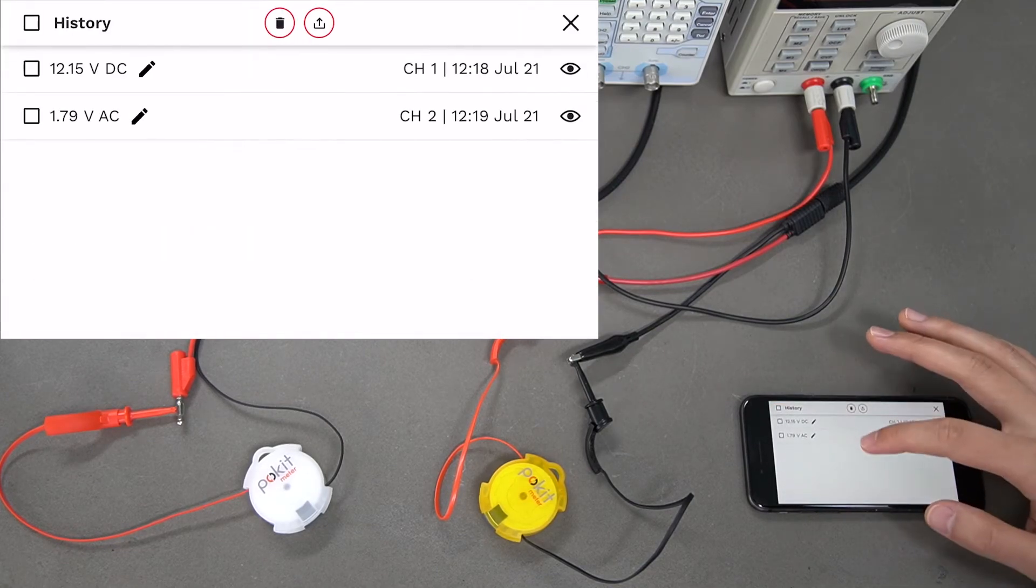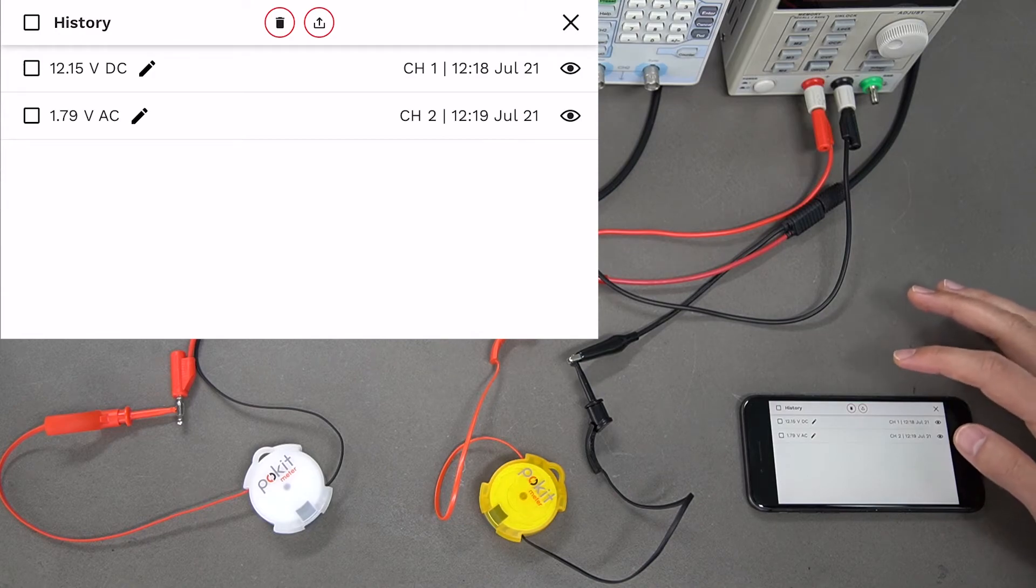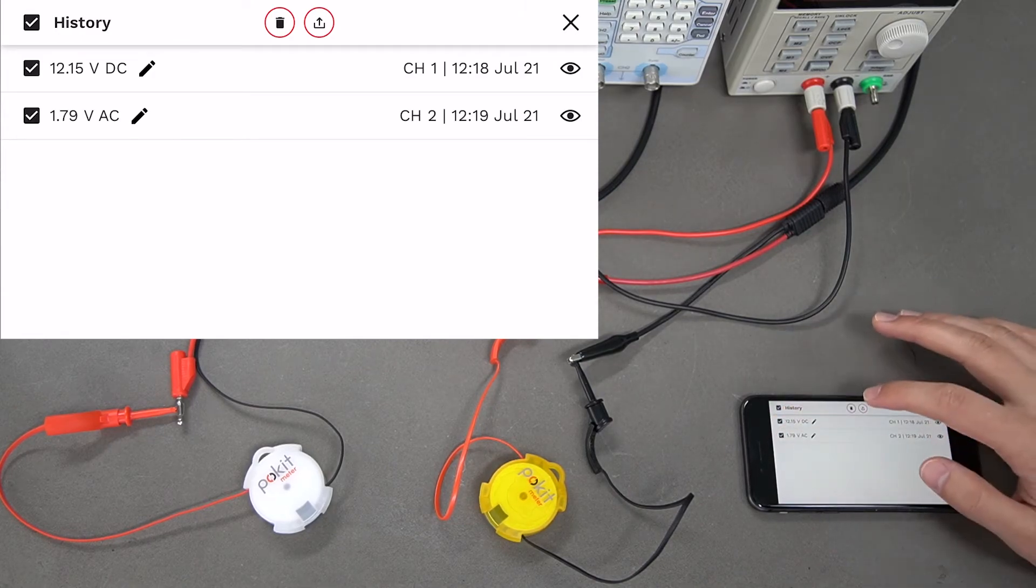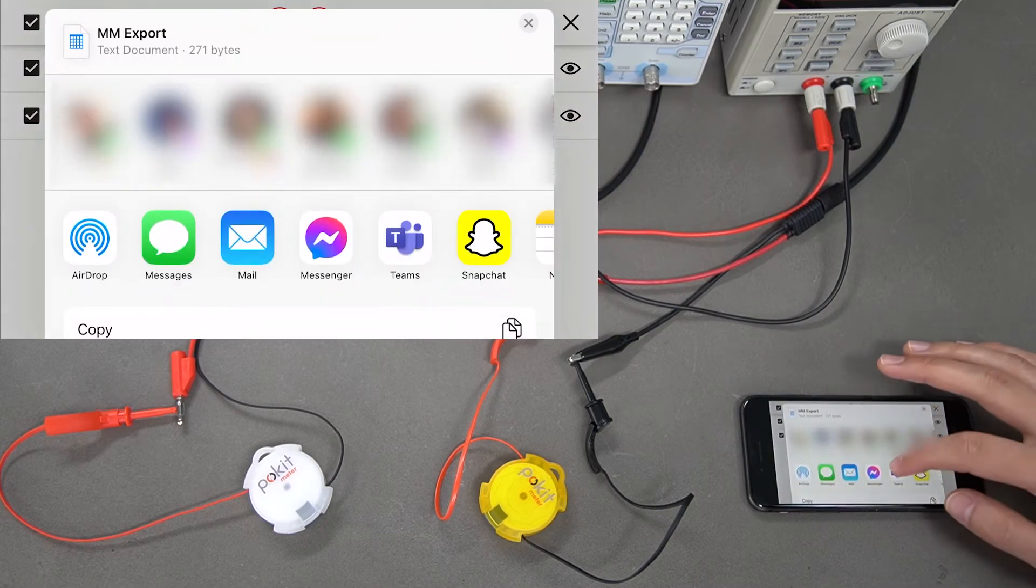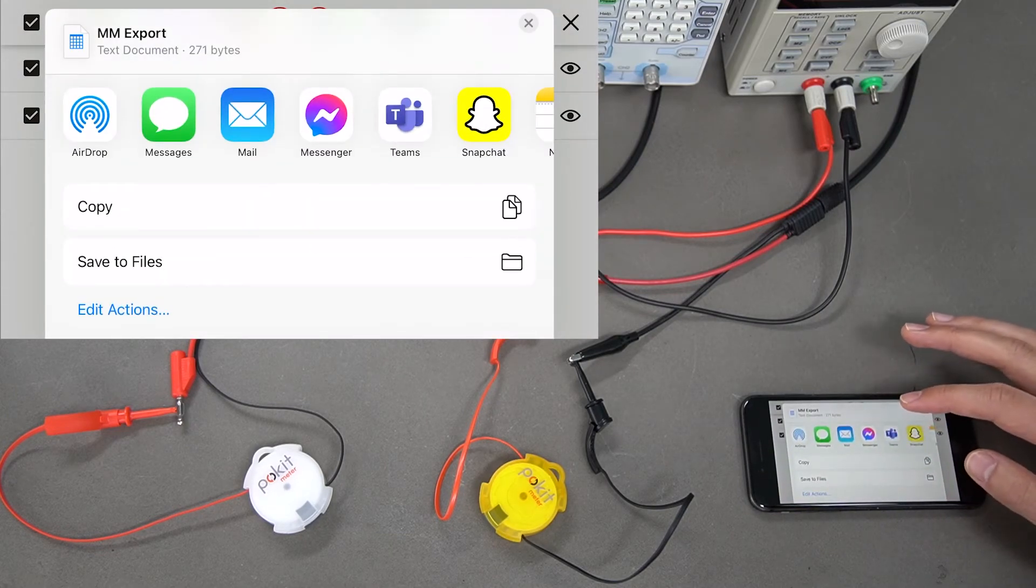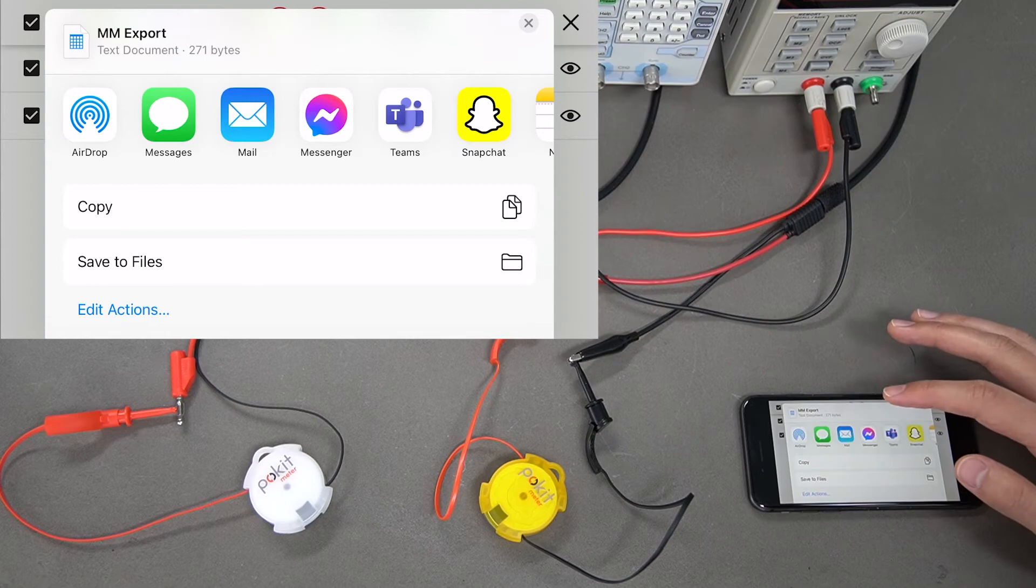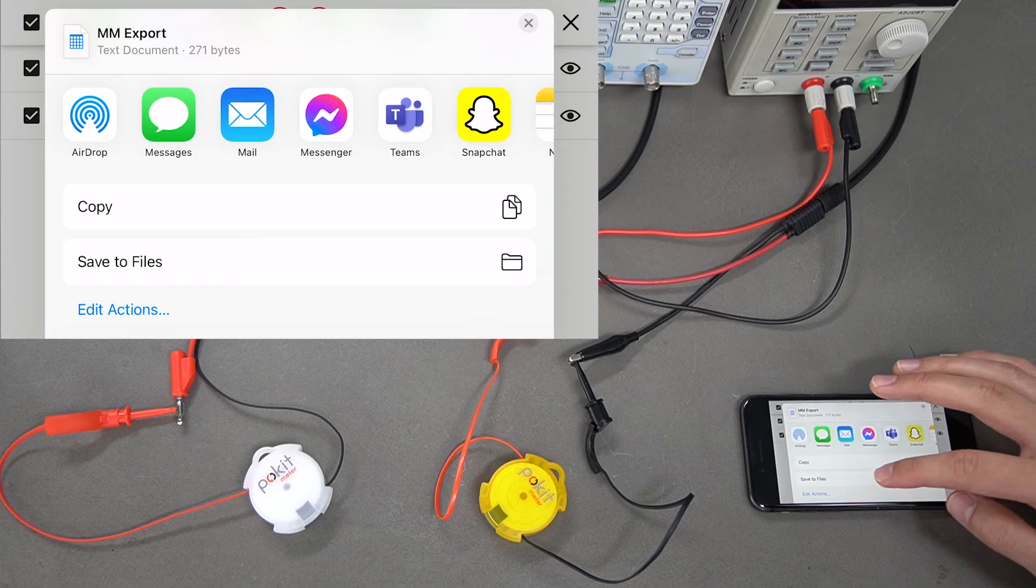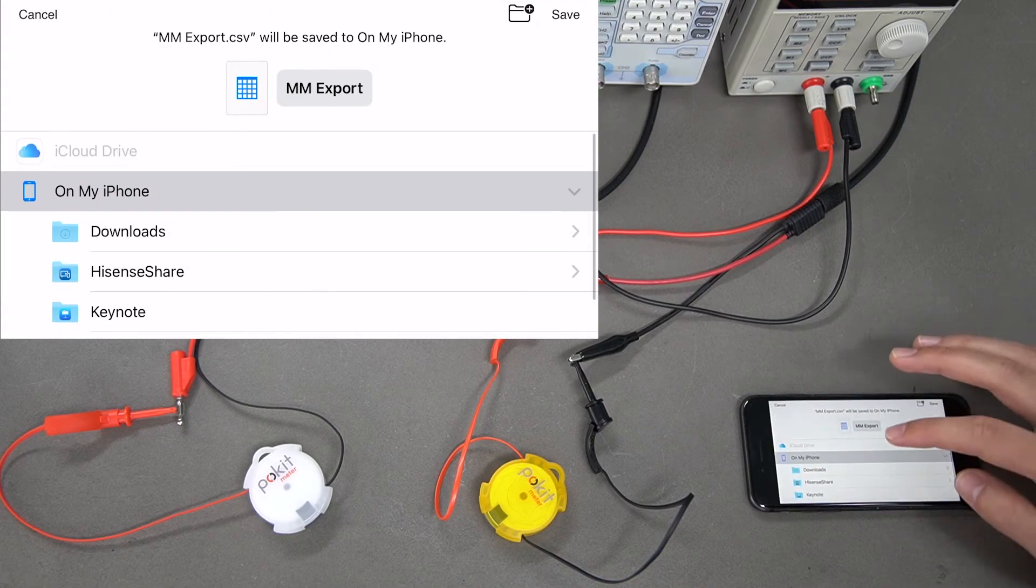We'll save that value as well. You can come down to history at the bottom and you can see them both saved there. If you want to export these, just select the ones you want to export, bring up this screen here, and you can save it wherever you like. You can send it by email, text message, Facebook, whatever you like, or you can just save it to the files on your phone, which we will do here.